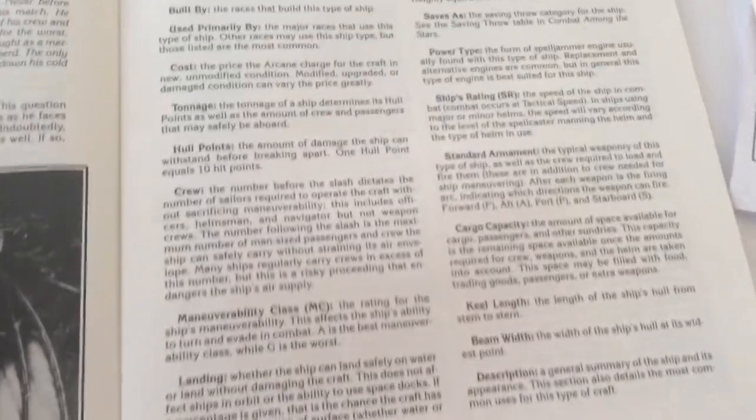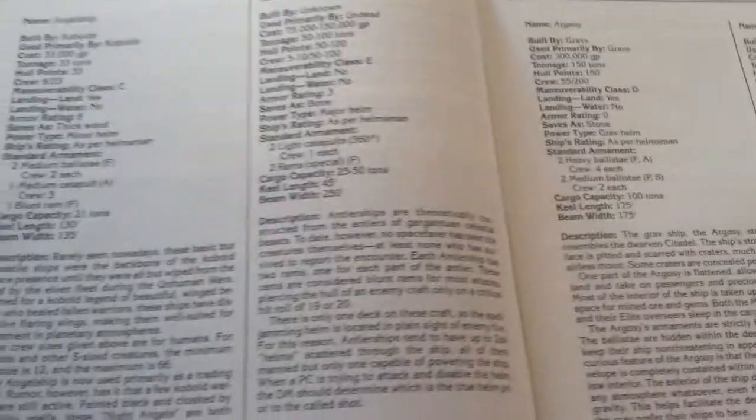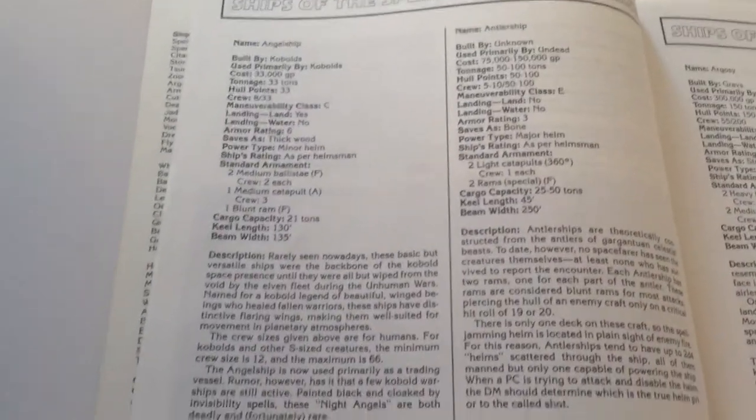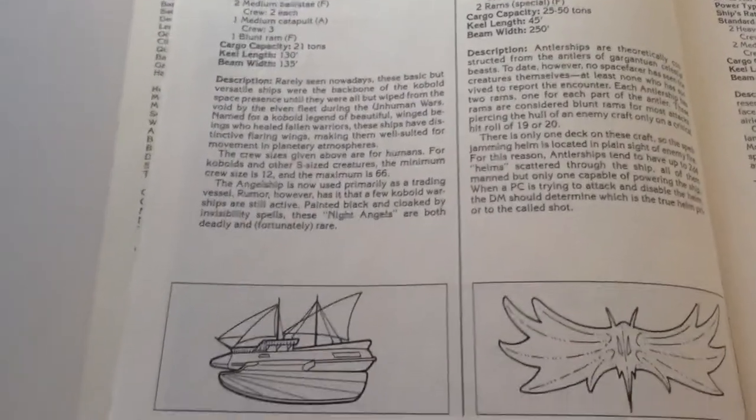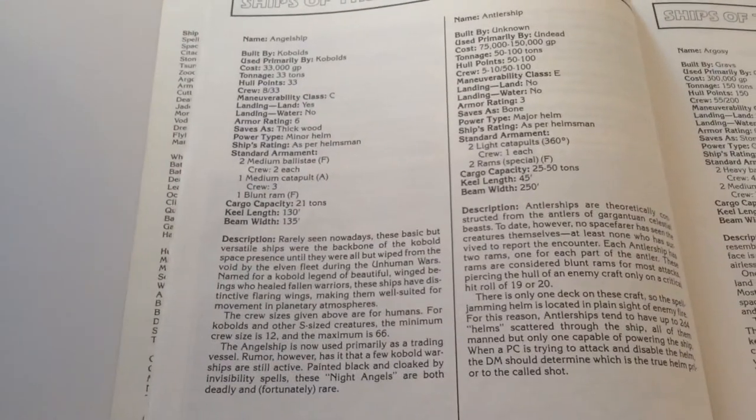Here's some definitions about what the terms mean that describe the ships. Then it's got like a half page for each ship with a picture. Some of these when they appeared before there was no pictures, so I want to make sure I show you all the pictures.